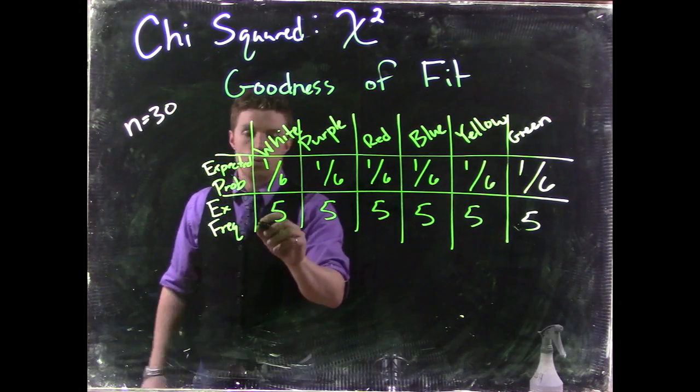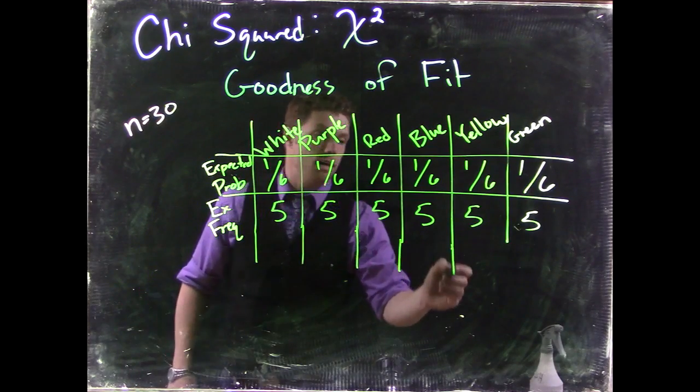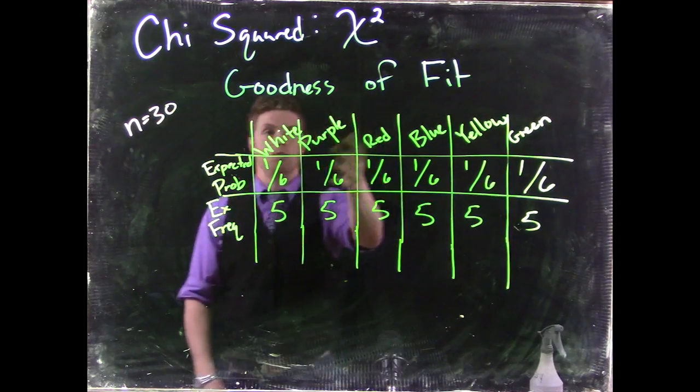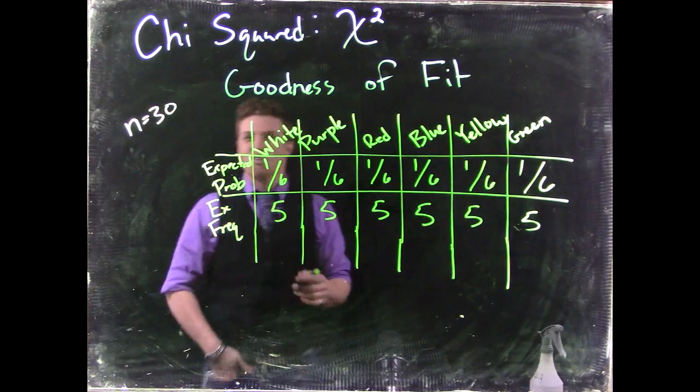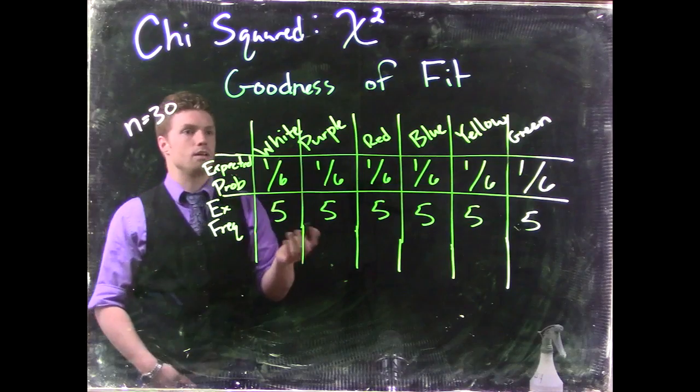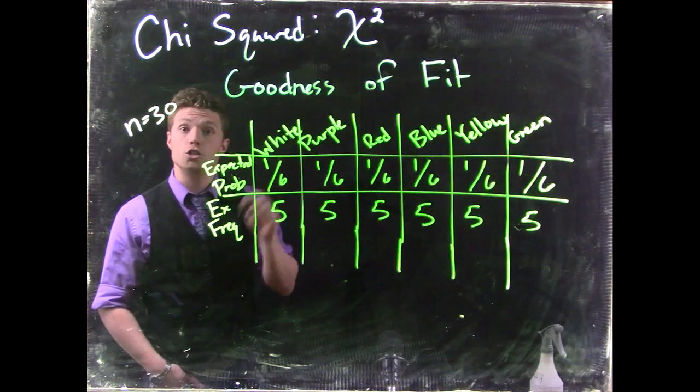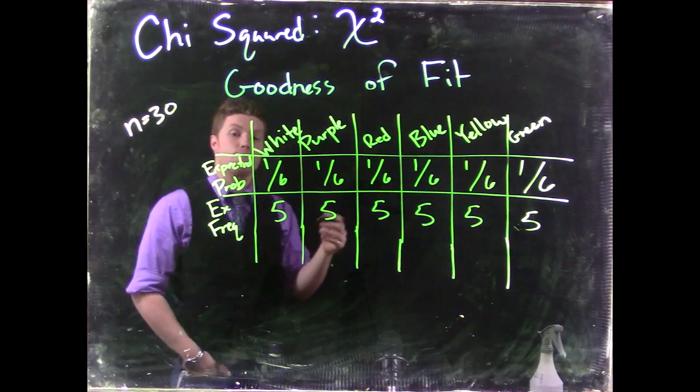Let's suppose that we have a dice that we're playing some game with, and we think that it's actually loaded. We think that this dice is producing maybe purple or red more often than it should be if it was a fair dice.